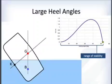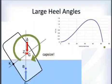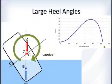This defines the range of stability. In this case, the ship is stable up to 52 degrees of heel and will return to upright within that range. Beyond 52 degrees it will capsize, because the moment now acts to continue the rotation rather than resist it.